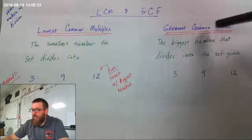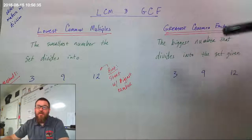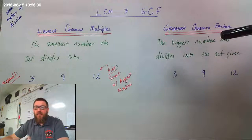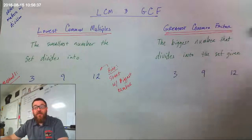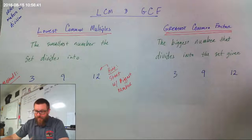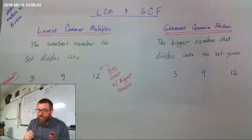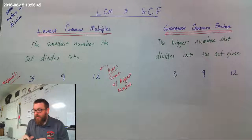And greatest common factor says: what's the biggest number that divides into the set of numbers you're given? So they're opposites, and it matters in which way you think about it.